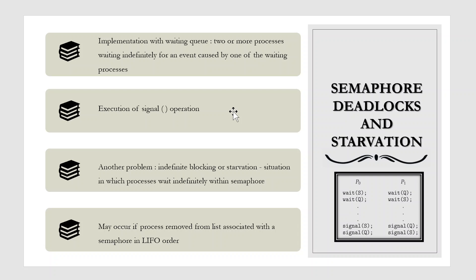To illustrate this, consider a system consisting of two processes P0 and P1, each accessing two semaphores S and Q, set to the value 1. Suppose that P0 executes wait(S) and then P1 executes wait(Q). When P0 executes wait(Q), it must wait until P1 executes signal(Q). Similarly, when P1 executes wait(S), it must wait until P0 executes signal(S). Since these signal operations cannot be executed, P0 and P1 are deadlocked.